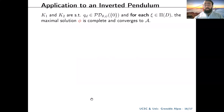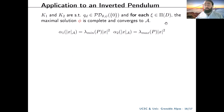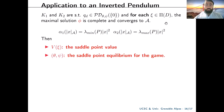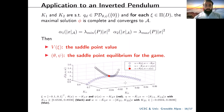K1 and K2 are such that QD is positive definite when both players play optimally, and for each initial condition in pi of D the maximal solution is complete and converges to calligraph A. We find our K-infinity functions alpha-1 and alpha-2 in terms of the eigenvalues of matrix P. Then B of the initial condition is the saddle point value, and the feedback laws are the saddle point equilibrium for the game, which can be visualized for a specific initial condition and variations of the gains in this figure.